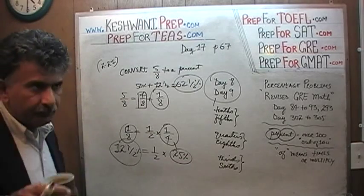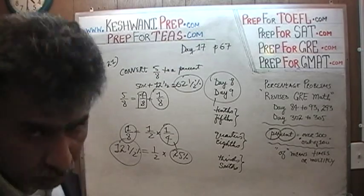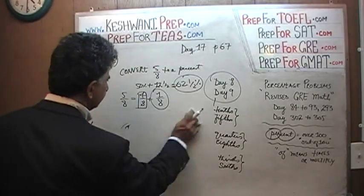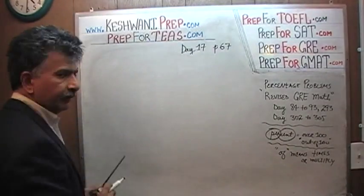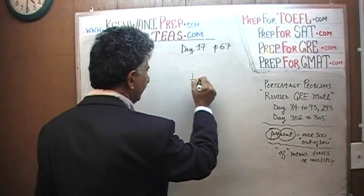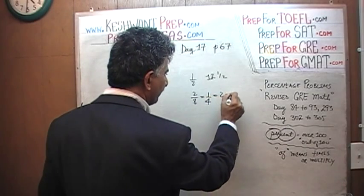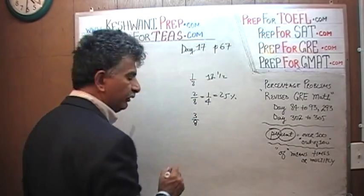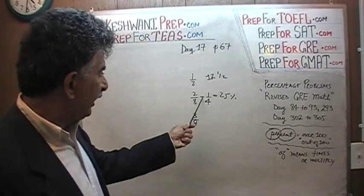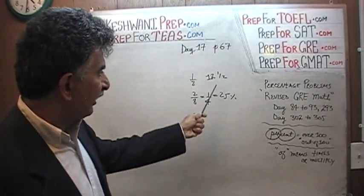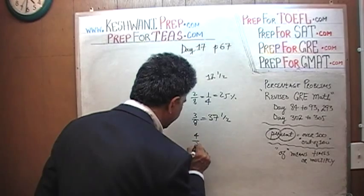You have to know all your eighths. So, that was day 8 and 9. One more time, very quickly: one eighth is 12.5%. Two eighths is just a quarter, which is 25%. Three eighths — if you want to find three eighths, it's very simple, no need to memorize anything. We just have to know the first one. Three eighths is just two eighths plus an eighth, which is 25 plus 12.5 — that's 37.5%.